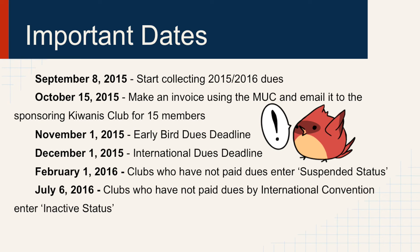February 1, 2016: clubs who have not paid dues enter suspended status. This is essentially a warning — your club is not in good standing and is not insured for service projects. Dues must be paid before ICON to be released from suspended status. July 6, 2016: clubs who have not paid dues by international convention enter inactive status. In order to reactivate your club, the reactivation form must be filled out along with half of the chartering form, and your club will also have to pay a $100 reactivation fee in addition to the dues that have not been paid. It would be best to prepare a primary invoice once you have collected dues from 15 members. Process these dues immediately and send those to Key Club International so that your club is in good standing from the beginning of the year. You can send a secondary invoice later with the bulk of your membership. As long as you have the immediate 15 members registered with international for the year, your club is in the green.